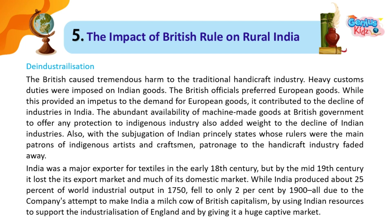India was a major exporter of textiles in the early 18th century, but by the mid-19th century it had lost its export market and much of its domestic market. While India produced about 25% of world industrial output in 1750, this fell to only 2% by 1900 — all due to the company's attempt to make India a milch cow of British capitalism, by using Indian resources to support the industrialization of England and by giving it a huge captive market.